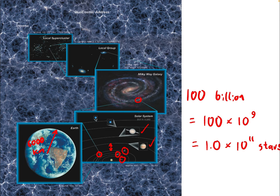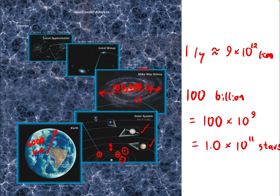The Milky Way galaxy has a diameter of about 100,000 light years, since it is shaped like a disk. A light year is a unit of distance equal to about 9 trillion kilometers — so one light year is about 9 × 10¹² kilometers. The name includes the word 'year' because it refers to how far light can travel in one year.